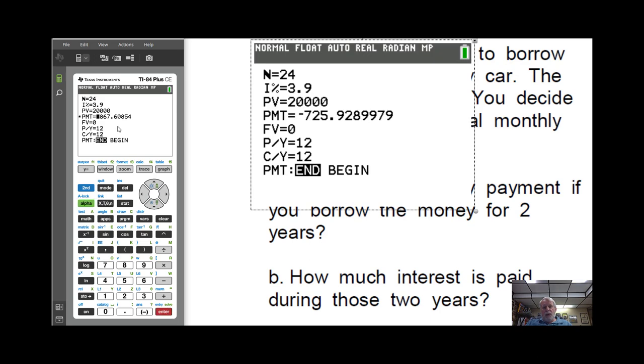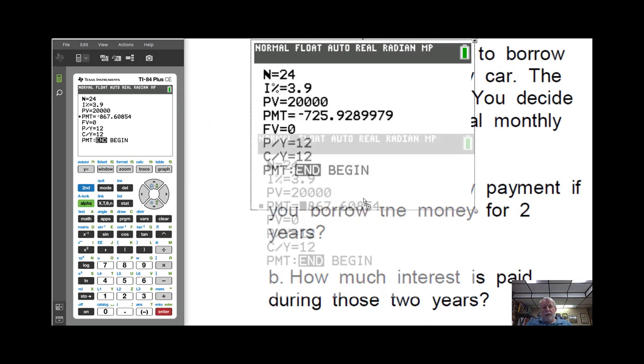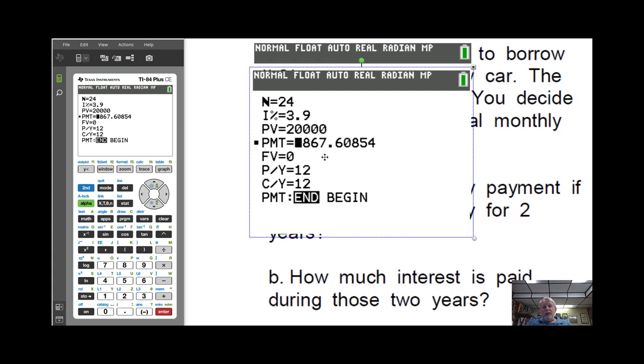And according to this, we're going to have to pay $867.61 each month for that, borrow that $20,000 for the car. $867.61.